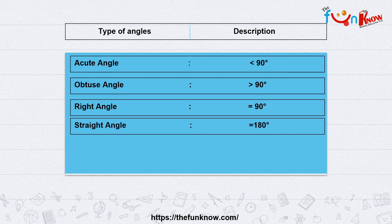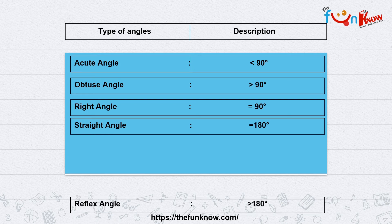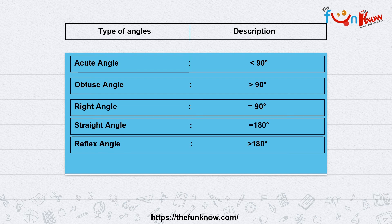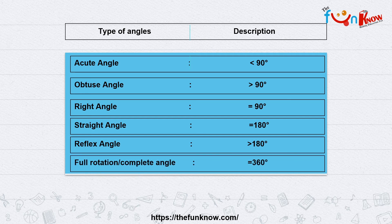Then there is straight angle — when two or more angles form a straight line, it is known as straight angle, which is 180 degrees. Reflex angle is something greater than 180 degrees but less than 360 degrees, meaning the angle is not able to complete a full rotation.